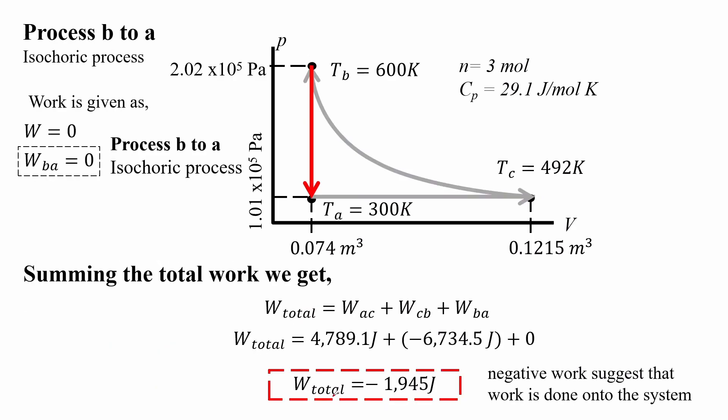The next process of the cycle is an isochoric process for B to A path. We recall that for an isochoric process there is no change in volume, so there is no work done. Work B to A is equal to zero.